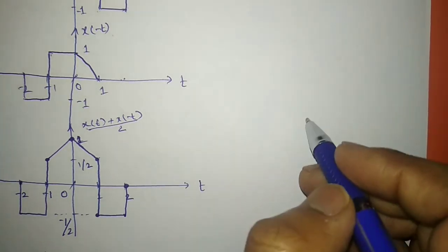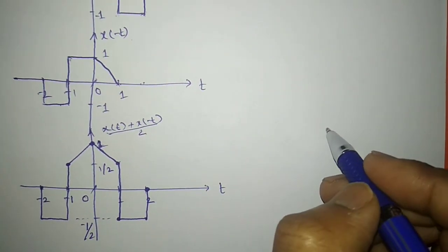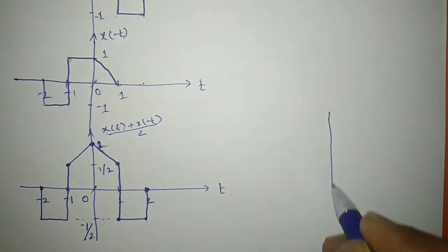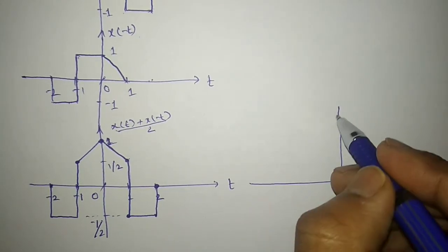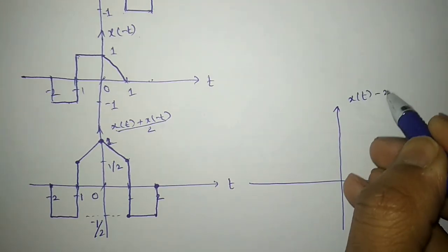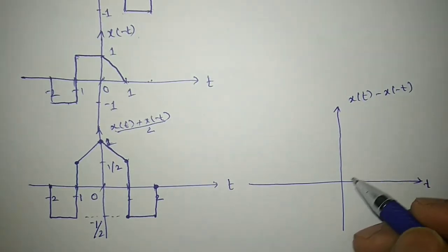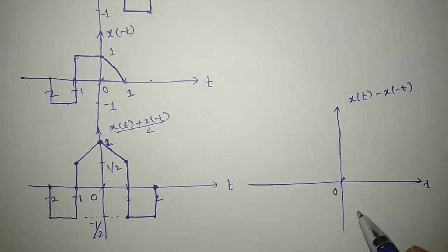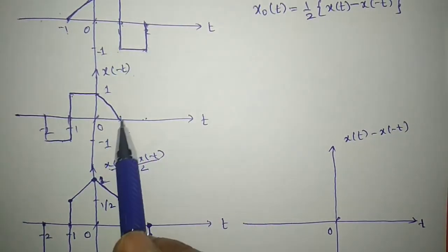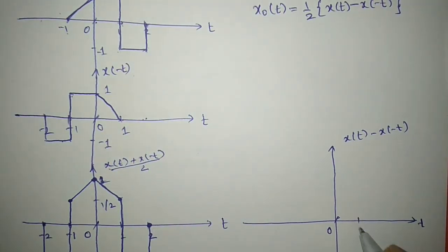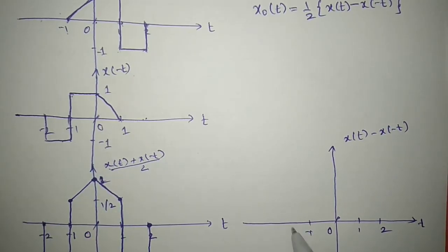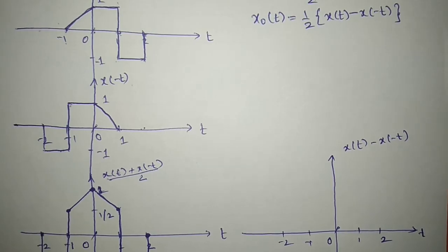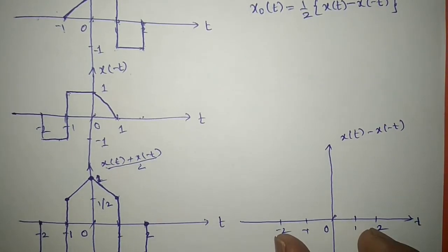Next is to get the odd part, xo = (1/2) * [x(t) - x(-t)]. I need to subtract those two signals. Let me write all the possible limits. x(t) is taking 0, 1, 2, and x(-t) is taking 0, minus 1, minus 2. So the signal will take shape between minus 2 to plus 2.